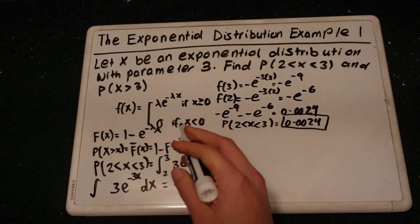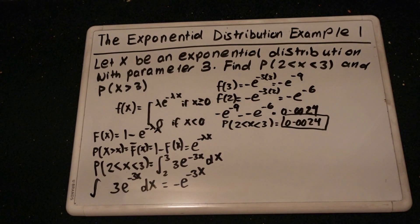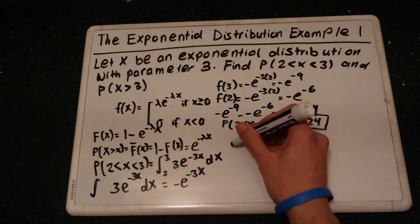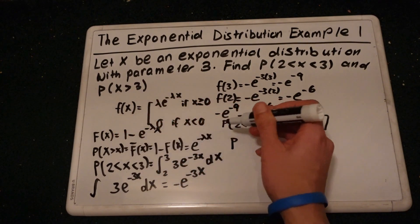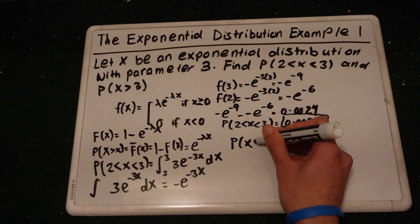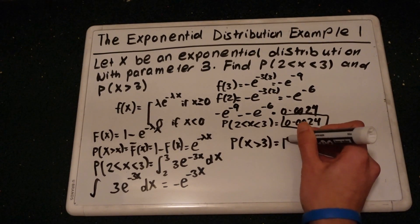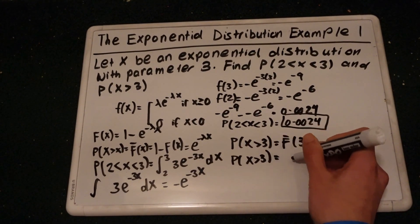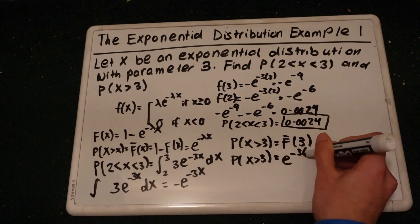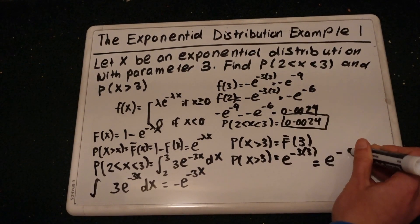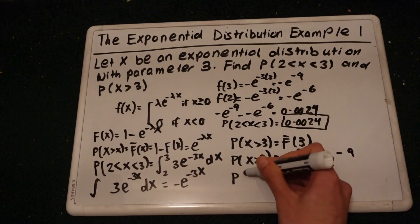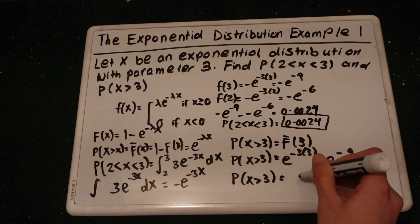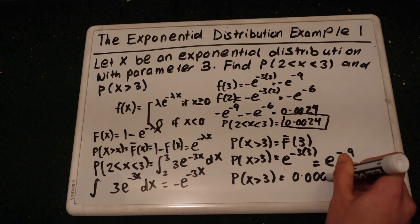Now we're trying to figure out the probability that x is greater than 3. I would use the cumulative distribution function to find this probability. Using the formula for the survival function, this is just e to the negative 3 times 3, which is e to the negative 9. Simplifying, we get the probability that x is greater than 3 is just 0.0001.